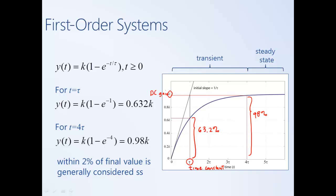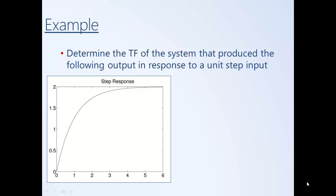In summary, we can memorize this shape based on two parameters: the DC gain k determines the steady state value of the system, and the time constant tau identifies the speed of response of the system.